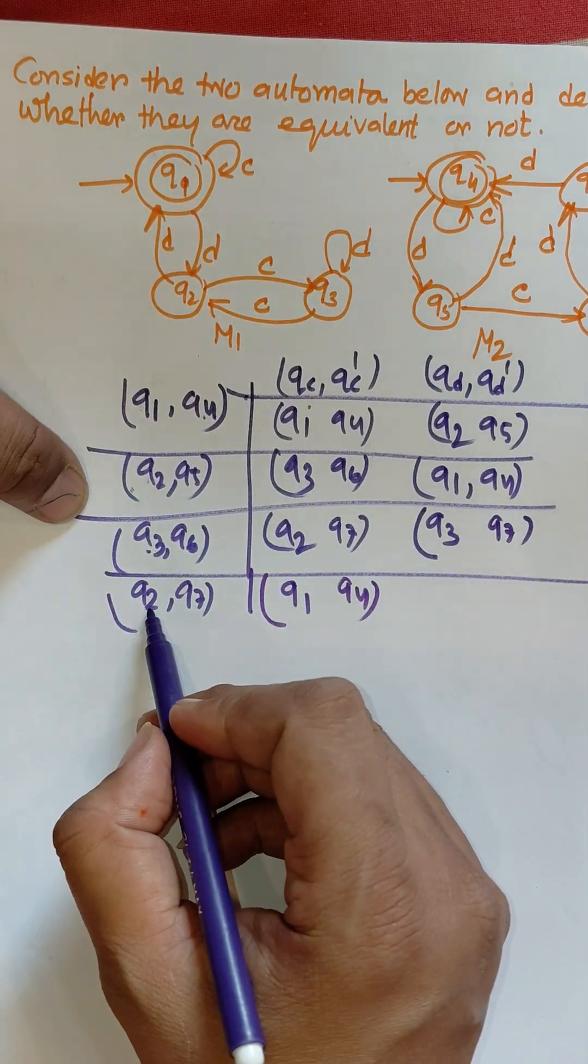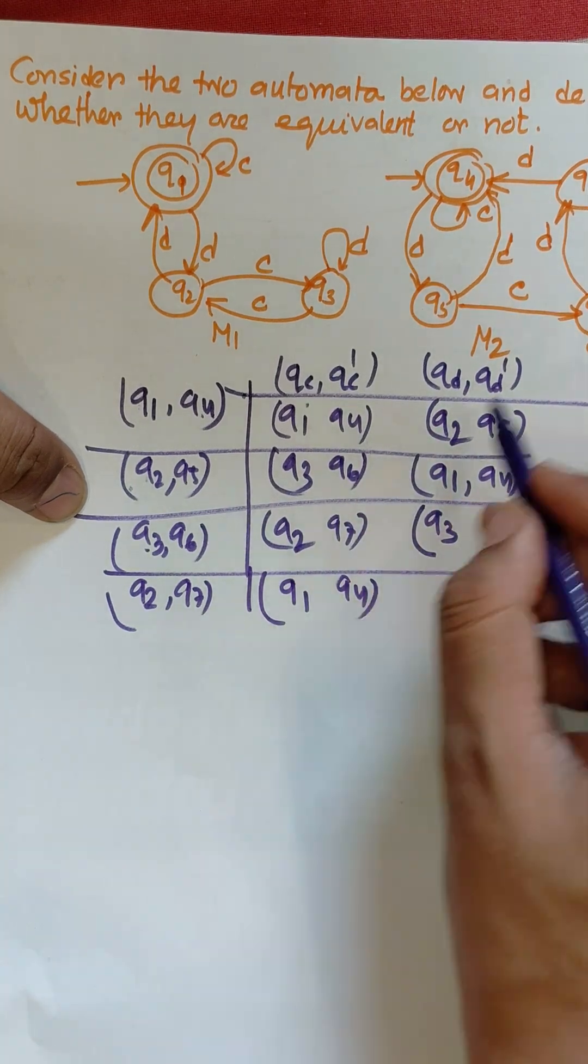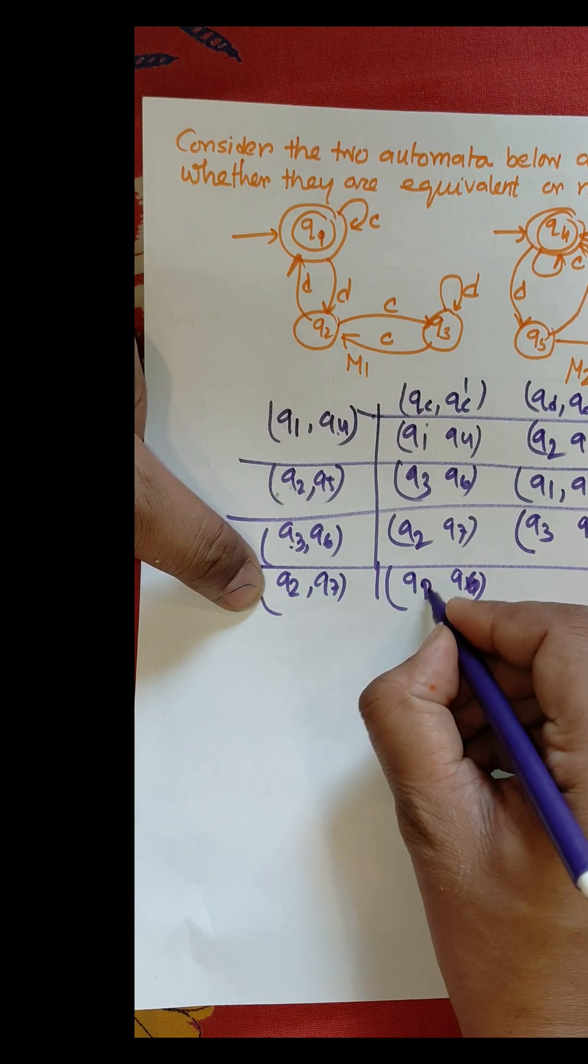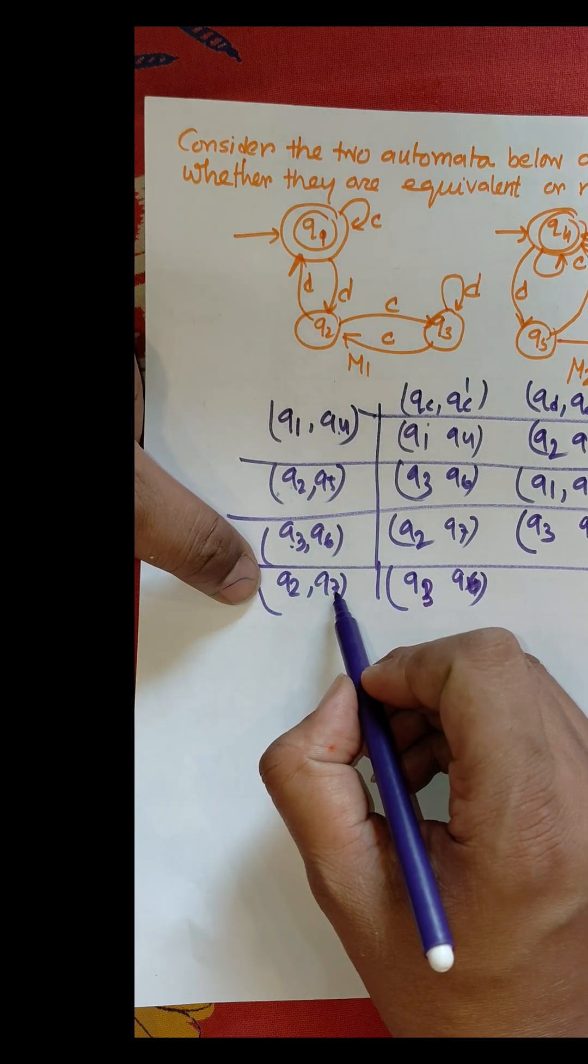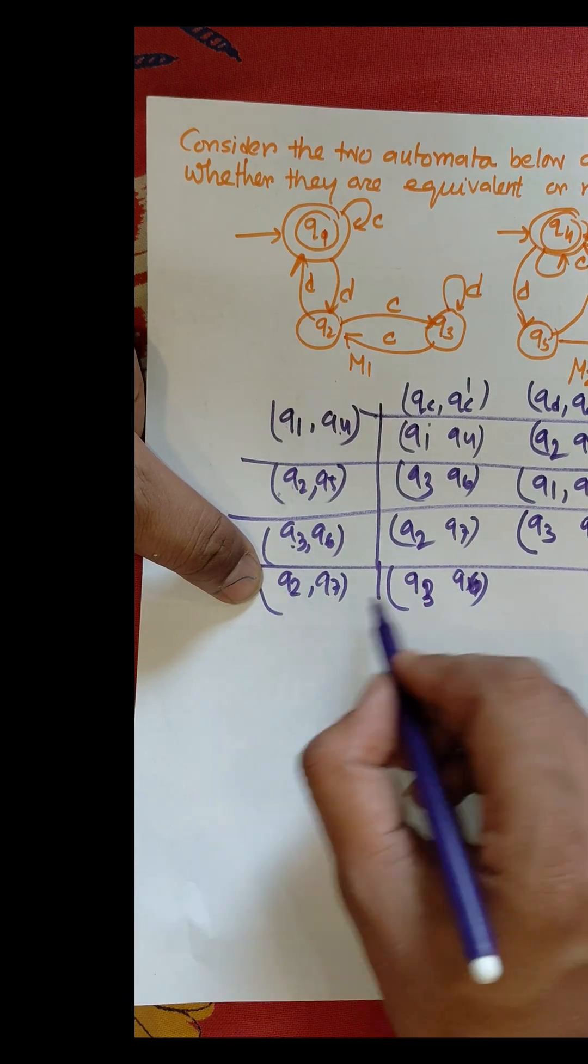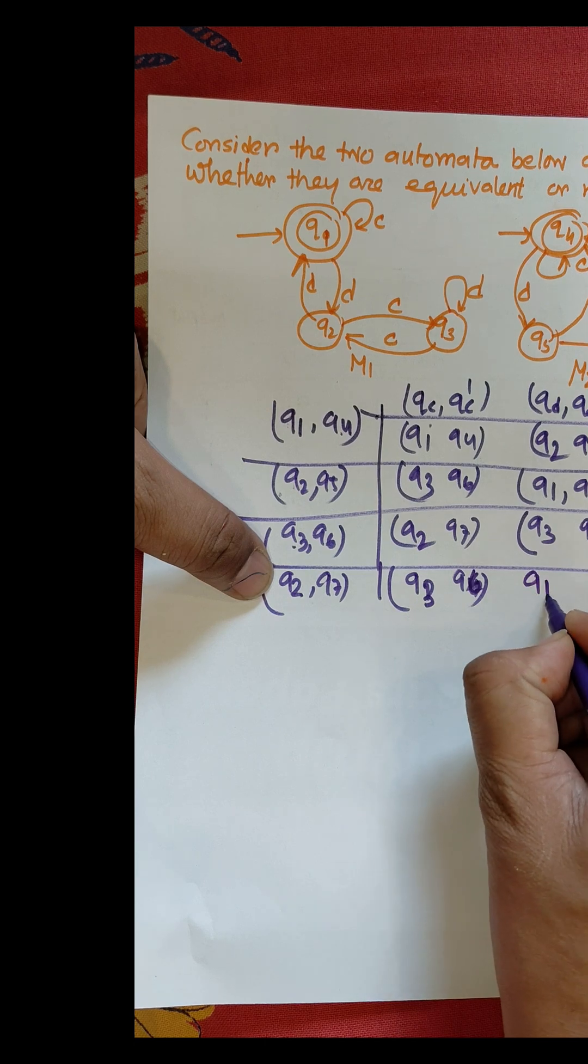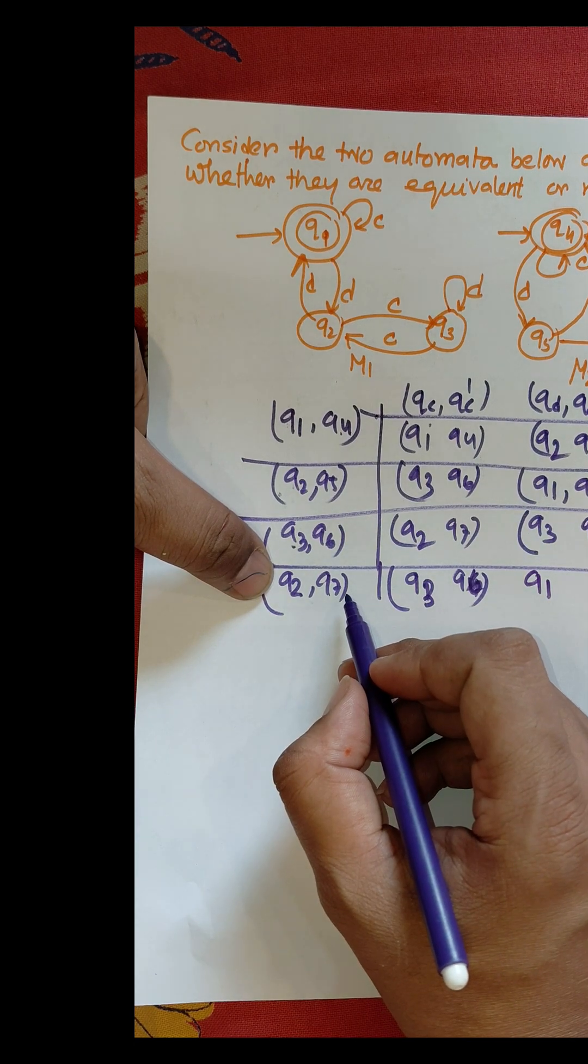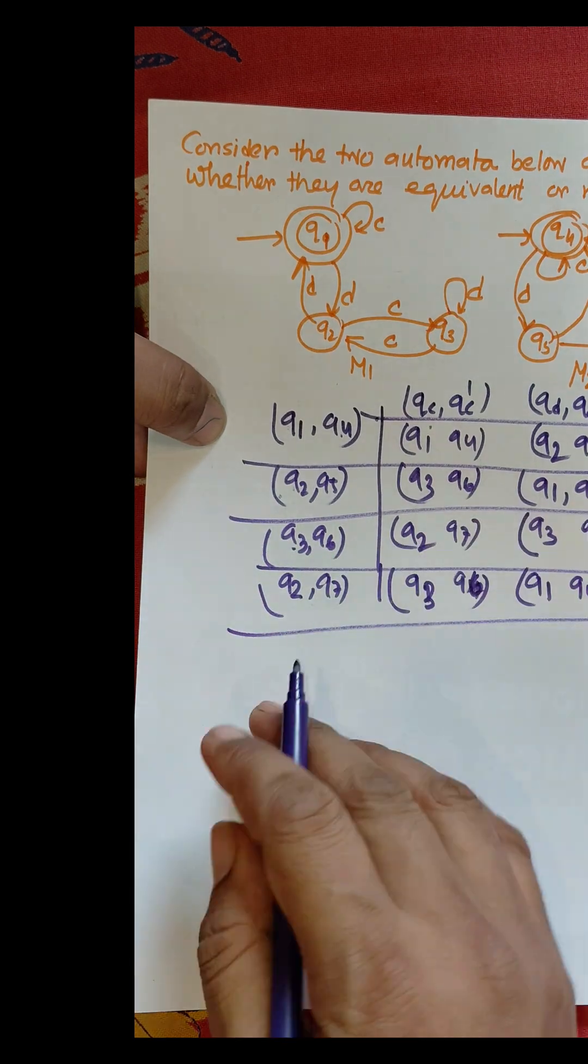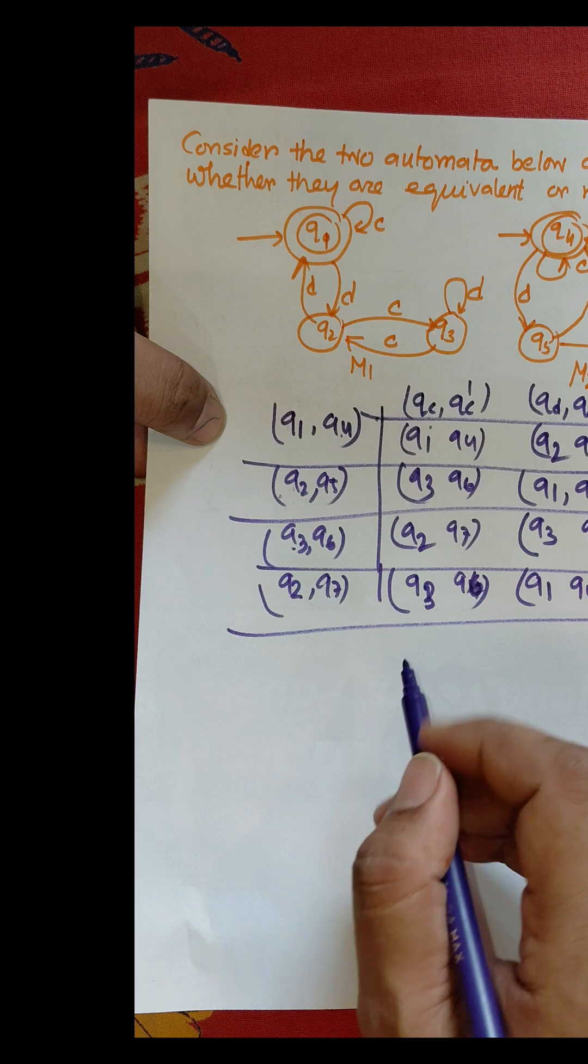Here all states are either final and final, or non-final and non-final. So we can say M1 equivalent to M2, both are equivalent.